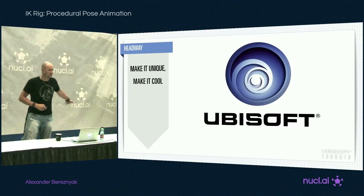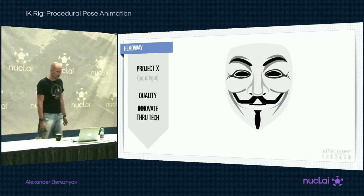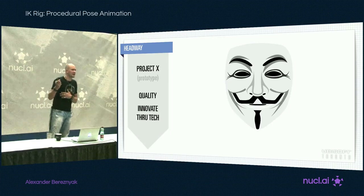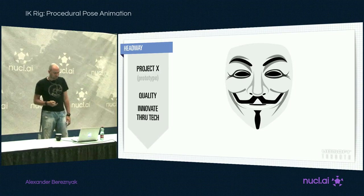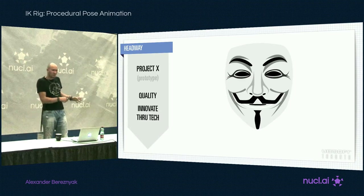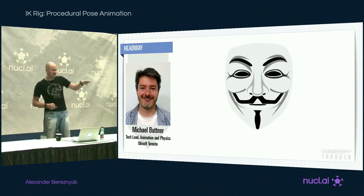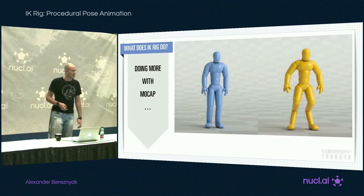The story begins. Ubisoft Toronto starts a new project. Ubisoft being Ubisoft, wants this project to be something special, something unique, do something that wasn't done before. The creative artistic people of Ubisoft Toronto come up with crazy ideas that you can't really do with existing tech, so we come up with crazy tech. Our goal was to innovate animation through technology - it's not as boring as it sounds, actually quite fun. One of the techs we developed is called motion fields - there will be a talk by Michael Botner and Simon Clavier later today. Another tech was called the IK rig. So what does it do?